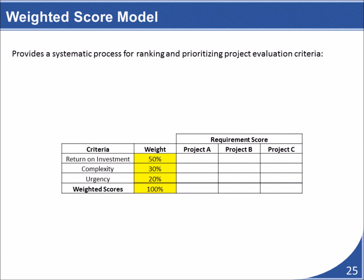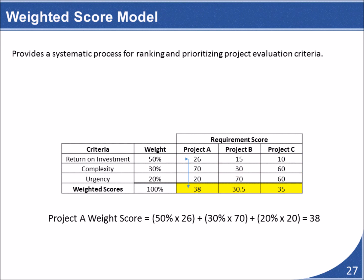Weights are added to each criterion, representing how important each one is to the overall organization. You should ensure that the various weights always sum up to 100. Having added the weights, you can now assess each project based on these criteria, using quantifiable and measurable ways to evaluate each project.